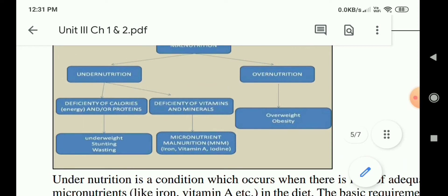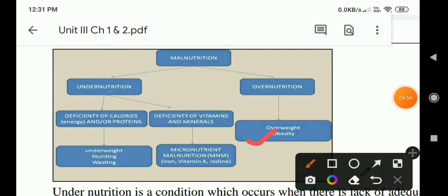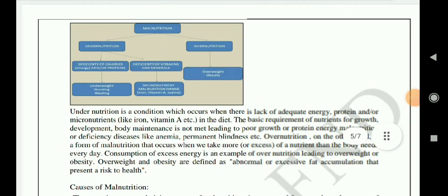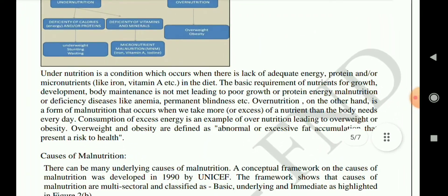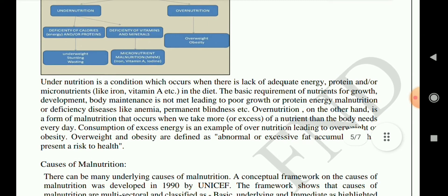Malnutrition is a condition which occurs when there is a lack of adequate energy, protein, or micronutrients like iron and vitamin A in the diet. When the basic nutrient requirements for growth, development and body maintenance are not met, it leads to poor growth, protein-energy malnutrition, or deficiency diseases like anemia and permanent blindness.